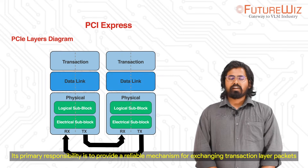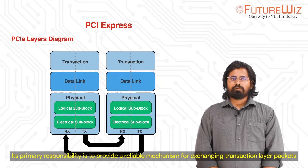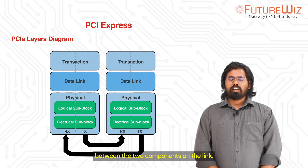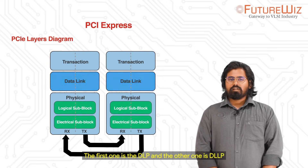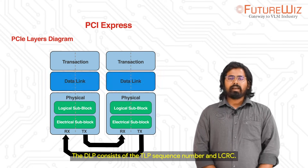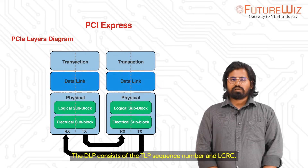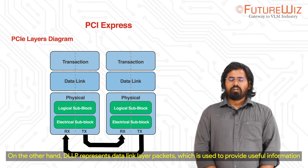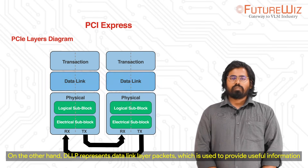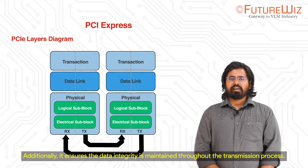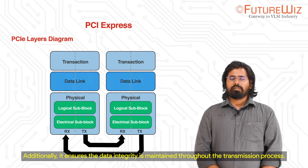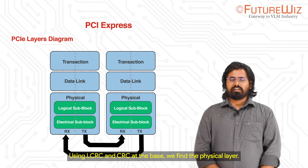Moving down the stack, we have the data link layer. Its primary responsibility is to provide a reliable mechanism for exchanging transaction layer packets between two components on the link. The data link layer has two types of packets: the DLP and the DLLP. The DLP consists of the TLP, the sequence number, and LCRC. DLLP represents data link layer packets, which are used to provide useful information about the transaction and the physical layer. It ensures data integrity is maintained throughout the transmission process using LCRC and CRC.